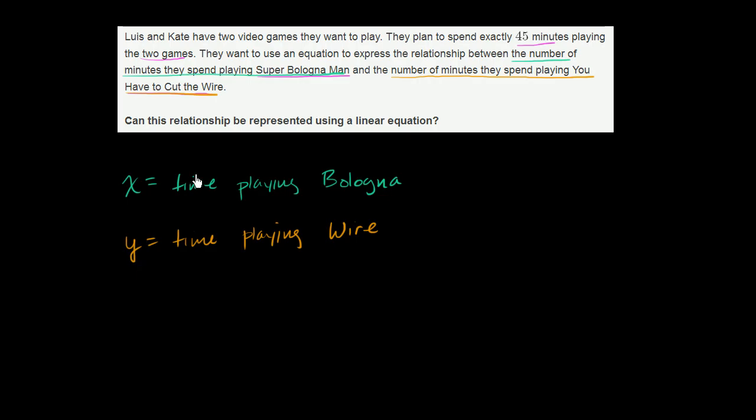If we have the time playing Bologna and the time playing Wire, if I add those two together, so x plus y, what does this need to equal? Well, if I add them together, they want to spend exactly 45 minutes playing both games. So this is going to equal 45 minutes. Now we have set up an equation that relates the time playing Bologna Man and the time playing You Have to Cut the Wire.